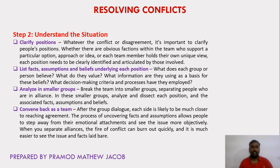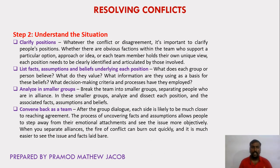Next is list the facts, assumptions, and beliefs underlying each position. What does each group or person believe? What do they value? What information are they using as a basis for these beliefs? What basic decision-making criteria and processes have they employed? All these questions should be answered while resolving a conflict. When a conflict arises, we have to ask why that particular person is opposing a particular solution or idea. For example, if a person has some ego with another person in the team, he may oppose that person's idea. In such a case, we can ignore this conflict and go with the proper solution. The team leader should ensure there is a valid, strong reason for any disagreement or conflict; otherwise we can simply ignore the conflict.